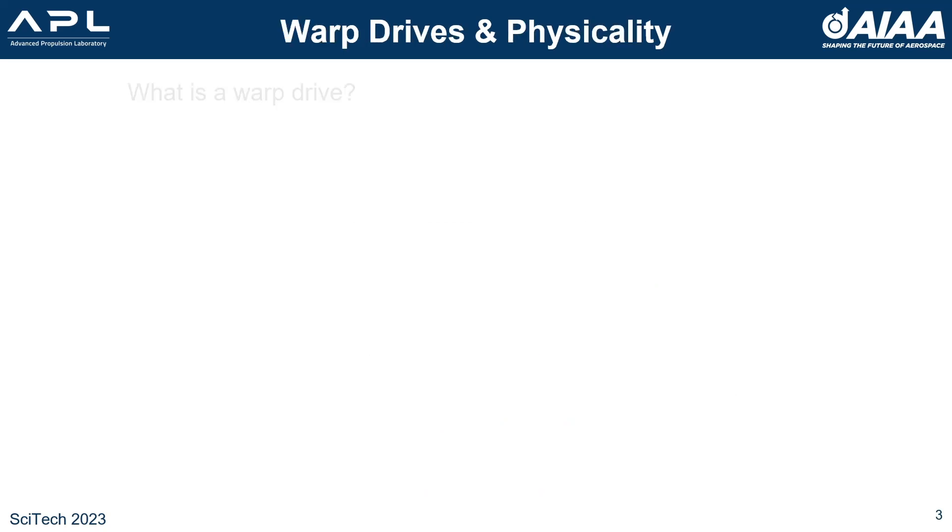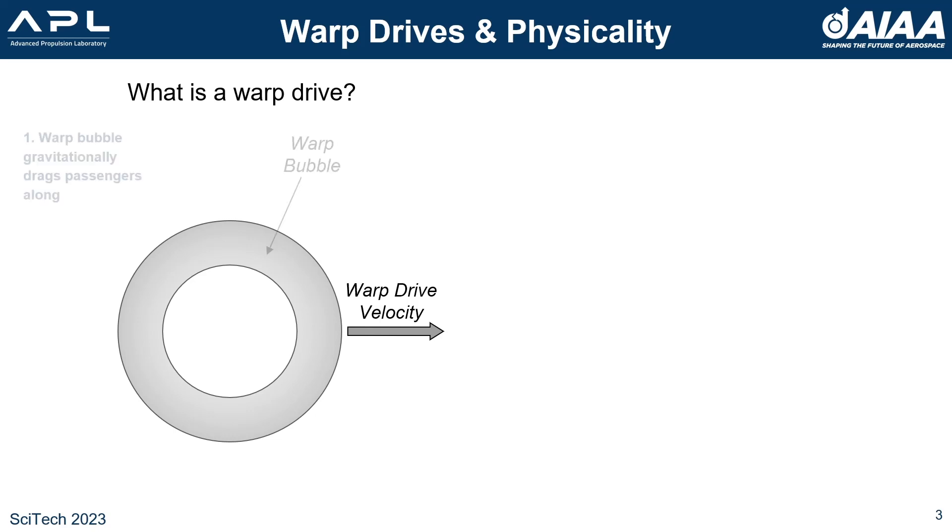The next question is, what is a warp drive? Using the shift vector term of the metric tensor, you can make a metric that has a region where space itself is moving. We consider those metrics warp drives if they make two conditions. One, passengers inside the warp bubble are dragged along with it so that they move with space, not through it. And two, passengers inside the bubble see a passenger volume or a region of flat space around them.